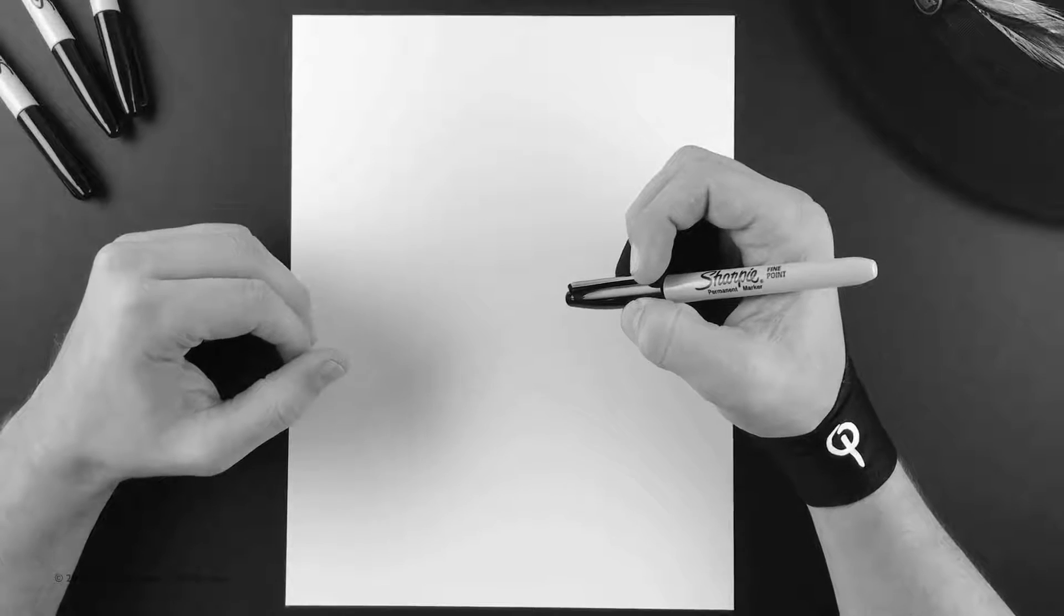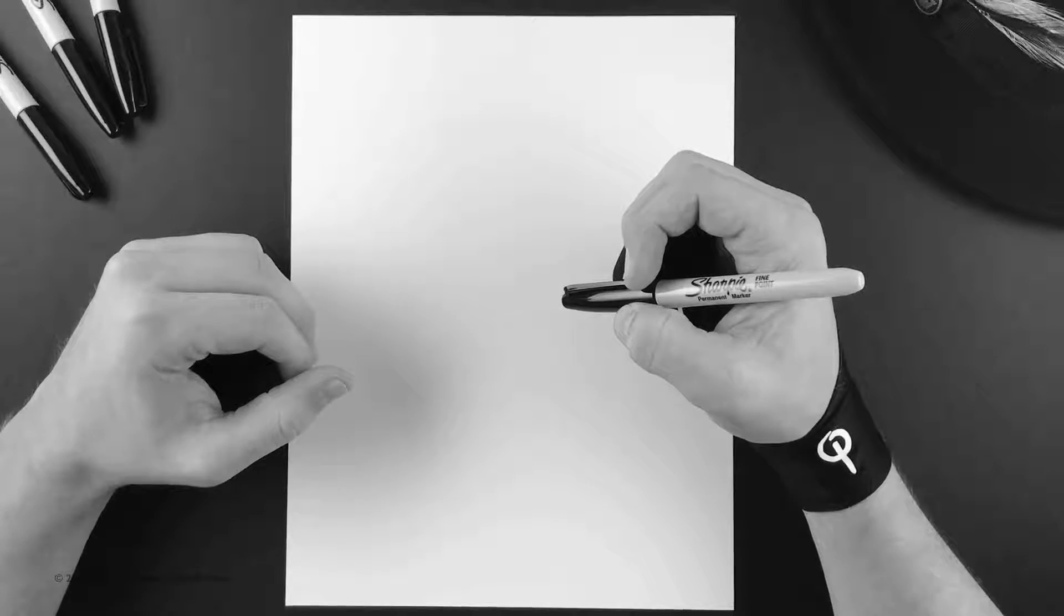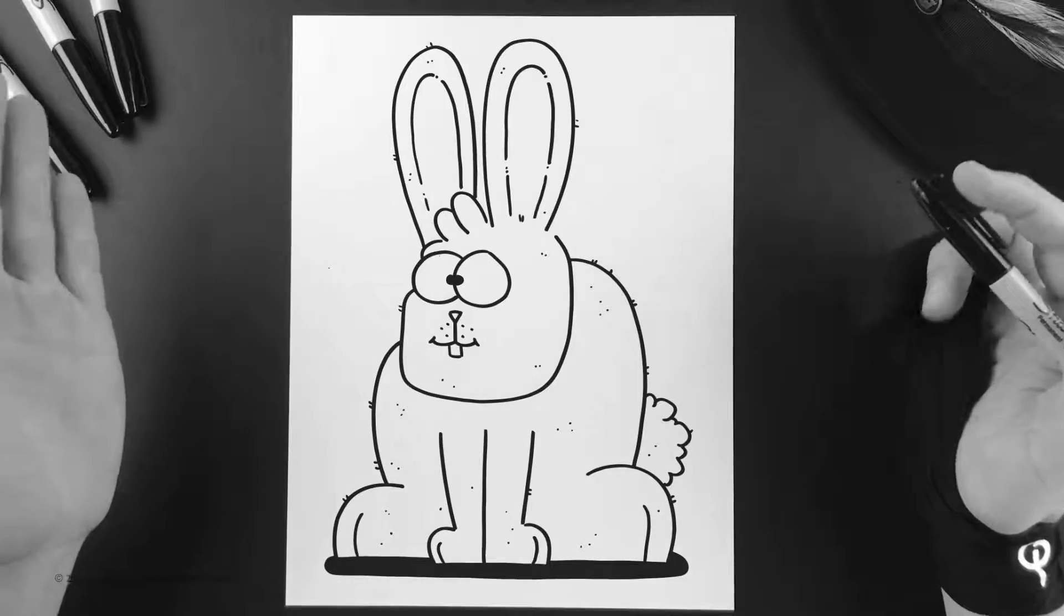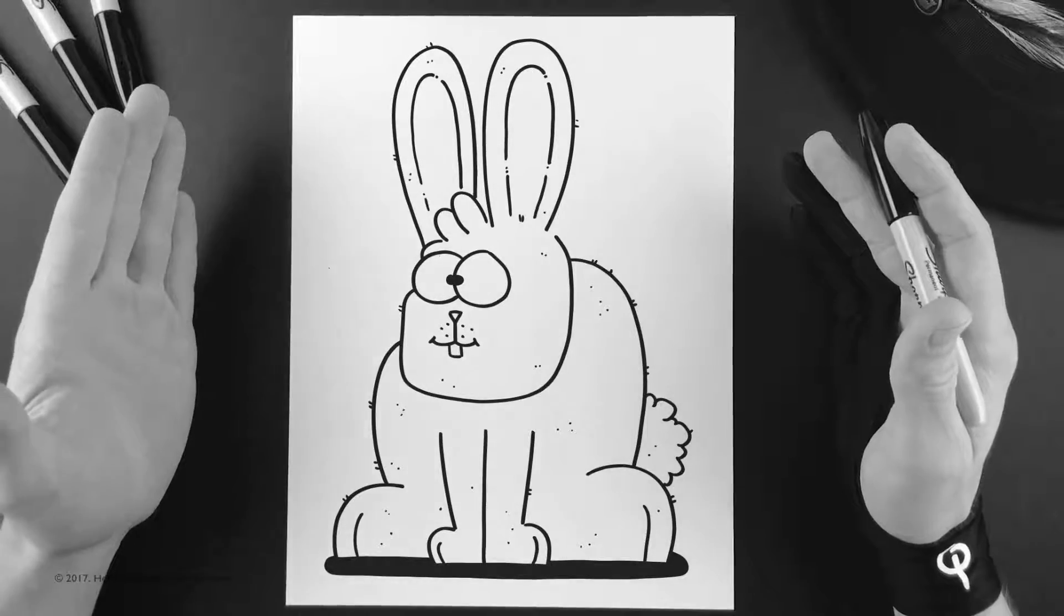Hey guys and welcome back to How to Draw with Mr. Gray. Today we're gonna draw a bunny. To do this, make sure you keep your paper vertical on this one, get your marker, and let's do this. We're gonna start with the eyes.